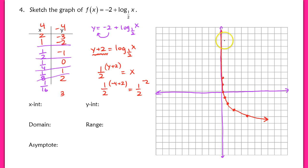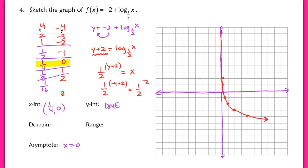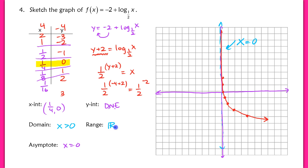Looking at my graph, I have a much better picture. The x-intercept is at (1/4, 0). There is no y-intercept — it doesn't exist because I have an asymptote at x equals 0. The domain is x greater than 0, and the range is all reals. Whenever a function is written differently, make sure to isolate the log first and then rewrite it as an exponential. It's the same strategy: rewrite as exponential, then pick y values for your table.